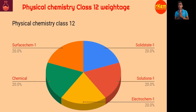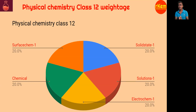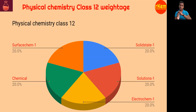Physical chemistry class 12: solid state is very simple — voids-based and formula calculation. The density formula D = Zm / (a³ × Nₐ) is a compulsory formula-based question. Solutions: colligative properties — just remember the 4 formulas with the van't Hoff factor and you will definitely get that question.